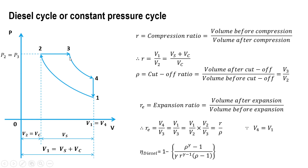For the expansion ratio Re, consider the 3 to 4 expansion process: Re equals V4 divided by V3. Since V4 equals V1 (constant volume process), we substitute V1 for V4, giving V1 upon V3. This can be rewritten as (V1/V2) × (V2/V3), which equals R × (1/Rho). Therefore, expansion ratio Re equals R upon Rho.